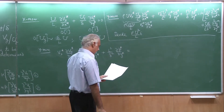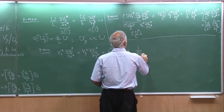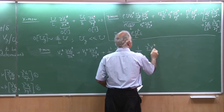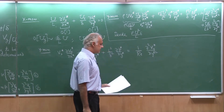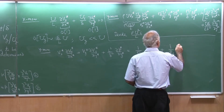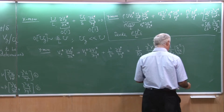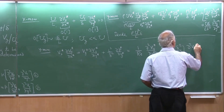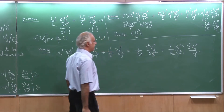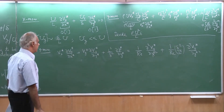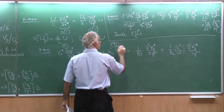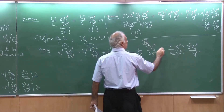I will already substitute for the Reynolds number. We get del squared Vy star - that is the first viscous term - and then the next term would be plus 1 over Re times delta squared by L squared times del squared Vy star by del x squared. So this is your non-dimensional equation. Let us number these terms: T1, T2, T3, T4, T5.